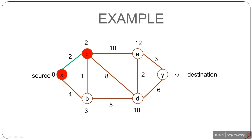The current values of unvisited nodes are: B = 3, D = 10, E = 12, Y = infinity. The smallest is B with 3, so we connect the next step of our shortest path to B. Checking B's neighbors: X and C are already visited, so only D remains. The distance from X to D via C and B is 2 plus 1 plus 5, which equals 8. Since 8 is less than 10, we assign 8. All neighbors of B are processed, so we mark B as visited.